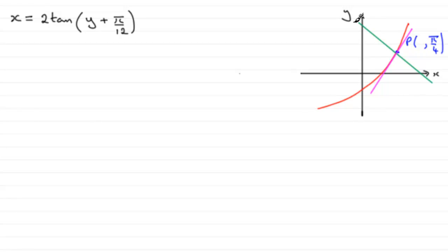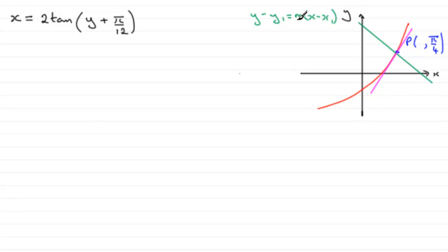We should know that the equation of a line has the form y minus y1 equals m bracket x minus x1. That's basically the form I'm going to work towards for the equation of this line. Remember, x1, y1 is a point on this line. We've already got y1 — it's π/4. We've yet to get the corresponding x1 value. As for m the gradient, I'm going to find the gradient of the tangent by differentiating, and then look at the perpendicular gradient as being minus the reciprocal of the tangent gradient at this particular point.